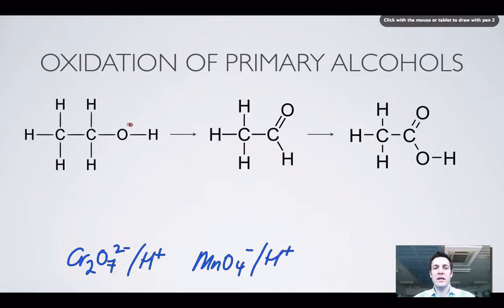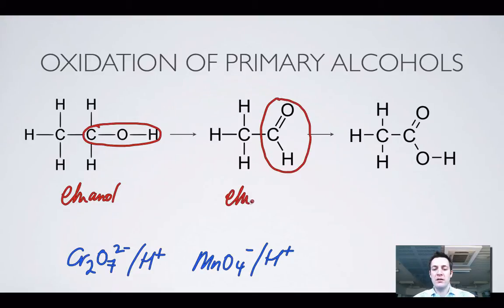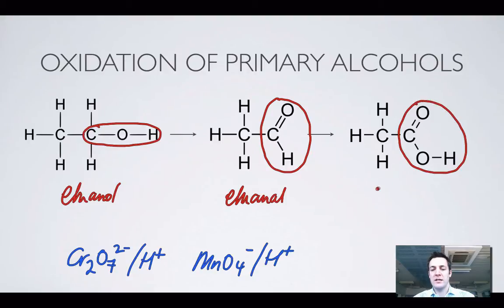We're starting here with a primary alcohol. There's my alcohol group that's got one carbon attached — this is ethanol. If I oxidise ethanol with one of these oxidising agents and I oxidise it partially, I'll turn it into an aldehyde. So here's ethanal. Any time I oxidise a primary alcohol partially I'll turn it into an aldehyde. If I oxidise it completely, I'll turn it into a carboxylic acid.